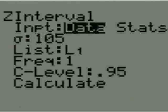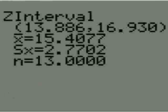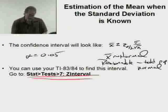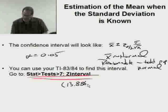The standard deviation it gave us is 2.8. I put my data in L1. Frequency I'm leaving at 1. Confidence level is 0.95. Now I'm going to calculate the interval. The z-interval is 13.886 to 16.930.